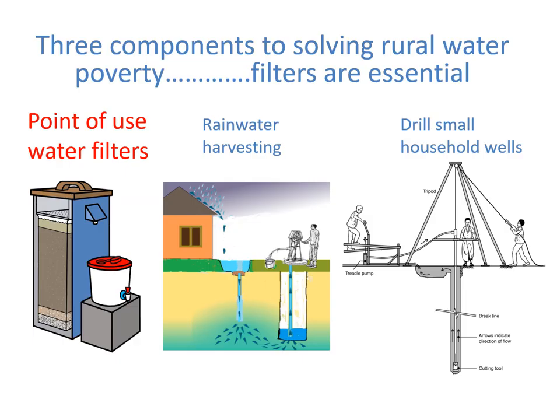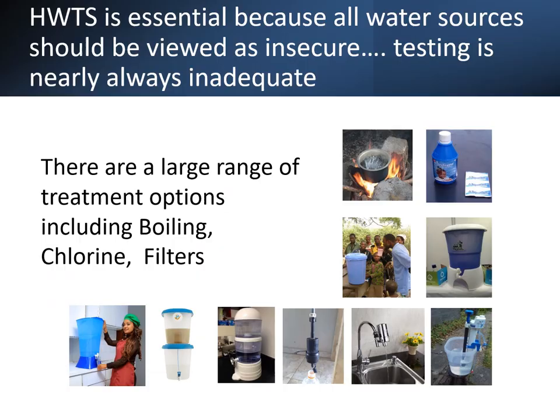There are three components to solving rural water poverty, and filters are essential. Household water treatment is essential because all water sources should be viewed as insecure. Testing is nearly always inadequate. Fortunately, there are a large range of treatment options, including boiling, chlorine, and filters.